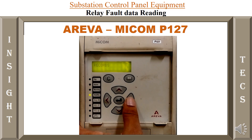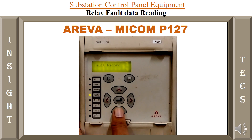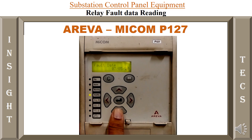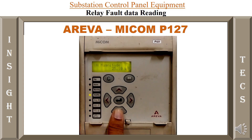You can see 'Records' — press down arrow: 'CB Monitoring,' right arrow again: 'Fault Record.' You will see number five, which is the latest fault. When you press the down arrow, you will see fault data like time, date, all the phase current magnitudes — IA, IB, and IC. There will also be other details like phase voltage and line voltage. You can see all the data regarding the latest fault here.